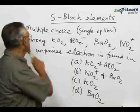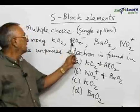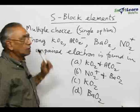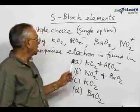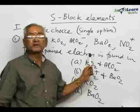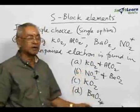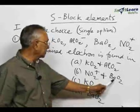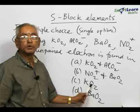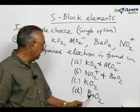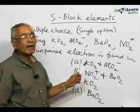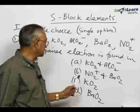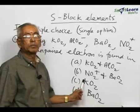The first question: among the various species AlO₂⁻, BaO₂, NO₂⁺, and KO₂, in which one compound is an unpaired electron found? The four choices given are KO₂, AlO₂⁻, NO₂⁺, BaO₂ (barium peroxide), and KO₂ (potassium superoxide). The correct answer for the question — which species contains an unpaired or odd electron — is KO₂, potassium superoxide.